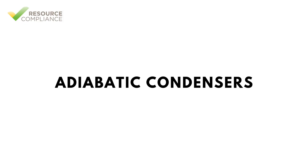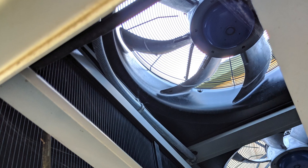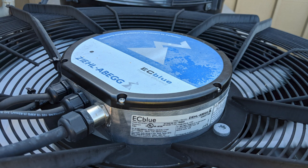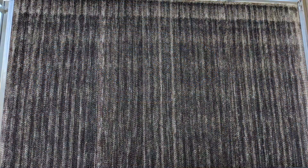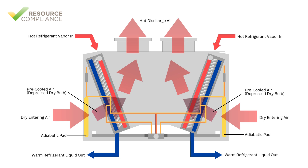An adiabatic condenser is a hybrid condenser that combines features of both air-cooled and evaporative condensers. When ambient temperatures are low, adiabatic condensers can operate in dry mode, where all heat exchange is accomplished through air movement without the assistance of water. When ambient temperatures rise, the condenser adjusts to adiabatic mode, where a water distribution system wets adiabatic pads, causing air drawn through them to cool via evaporation. The pre-cooled air then passes over the coils, enhancing the condenser's cooling capacity and maintaining efficient refrigerant condensation even in high-temperature environments.